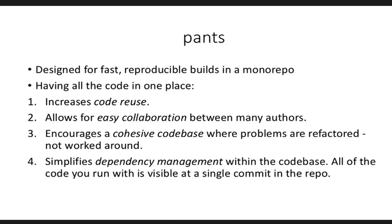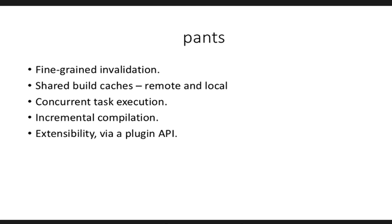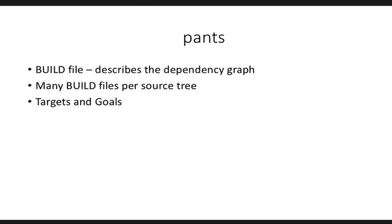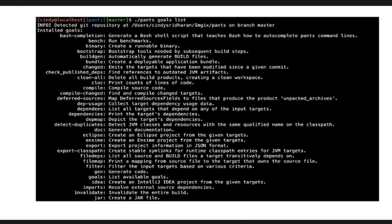In Pants, where we previously created setup.py files for building Python packages, you just have something called a build file which describes targets and goals. Targets in Python translate to a single Python package in general, and goals describe what you want to do to your targets. If you run pants goals list, you get a whole list including a goal for clean-all. Clean-all completely cleans all the build files — so the build system that launched a thousand jokes: 'did you wash your pants?'